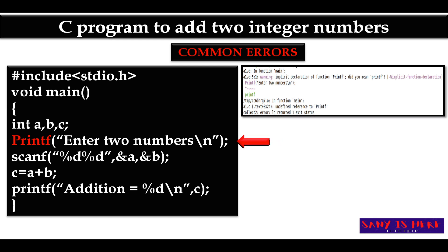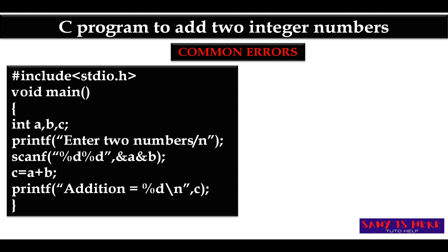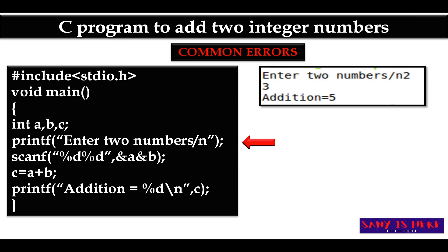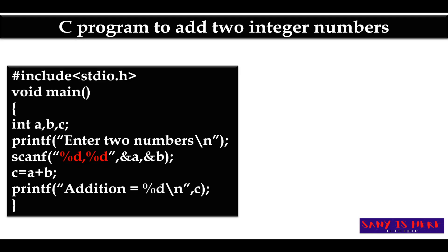The next common mistake is using the wrong slash with \n. It is actually a backslash followed by n ('\n'), but you might write it as a forward slash n ('/n'). When you do this, it directly prints the text without treating it as a newline — it is not recognized as an escape sequence.